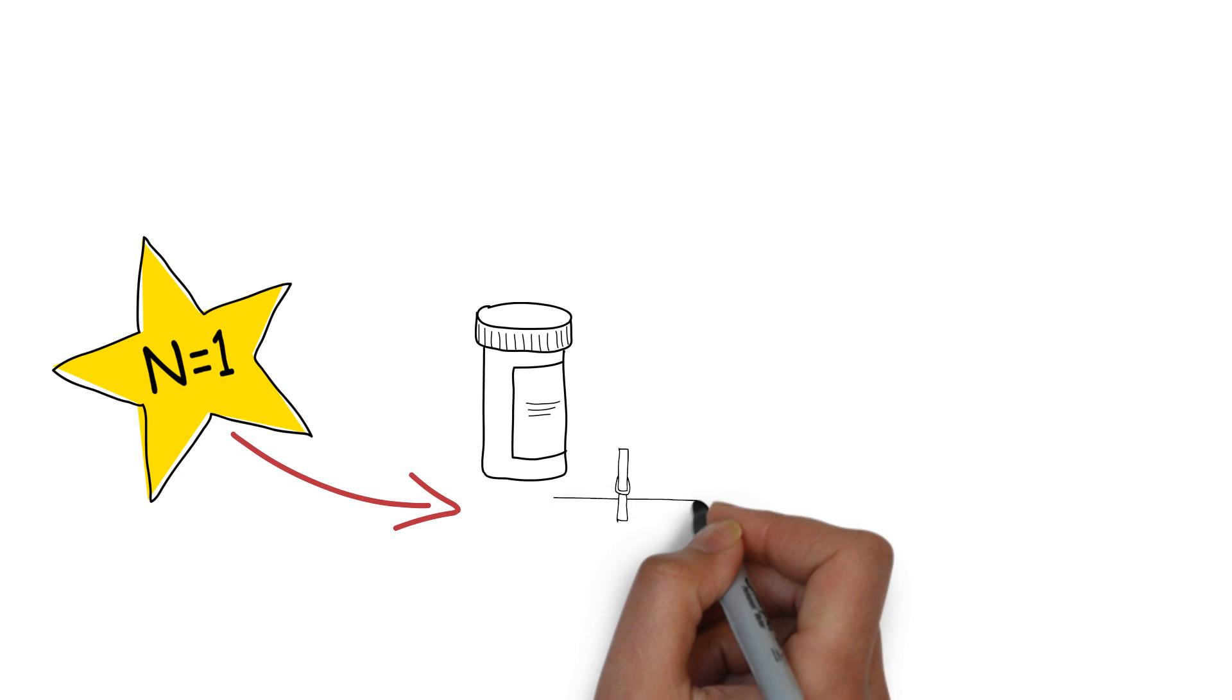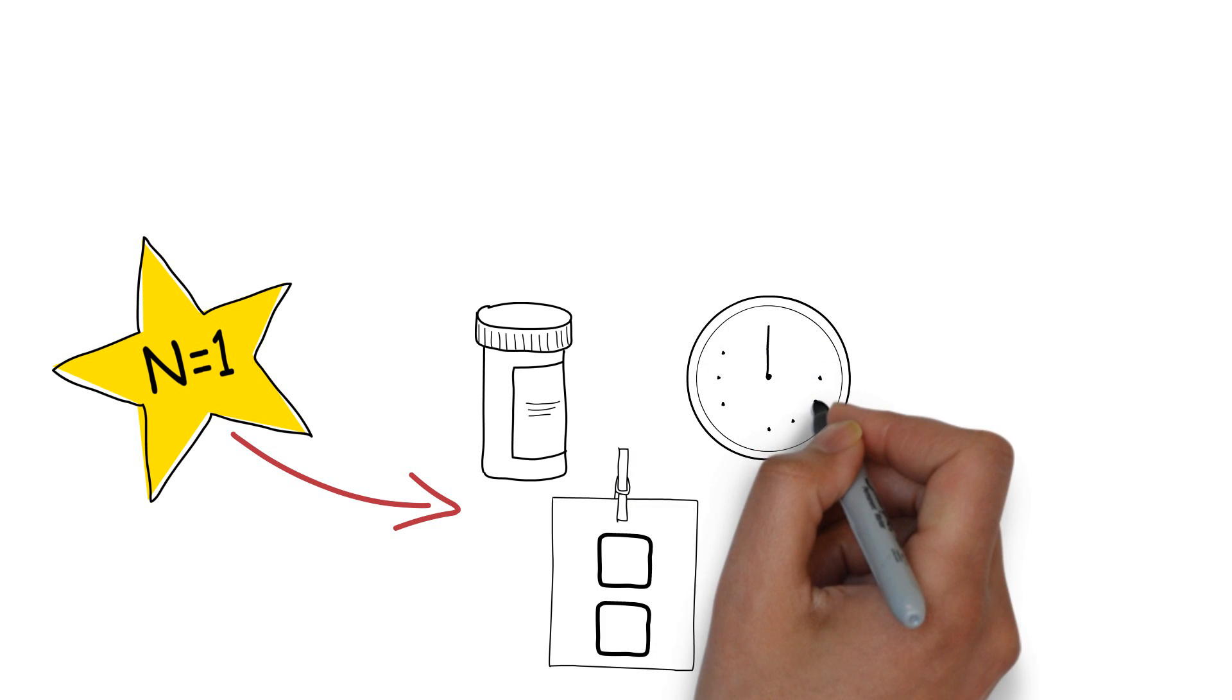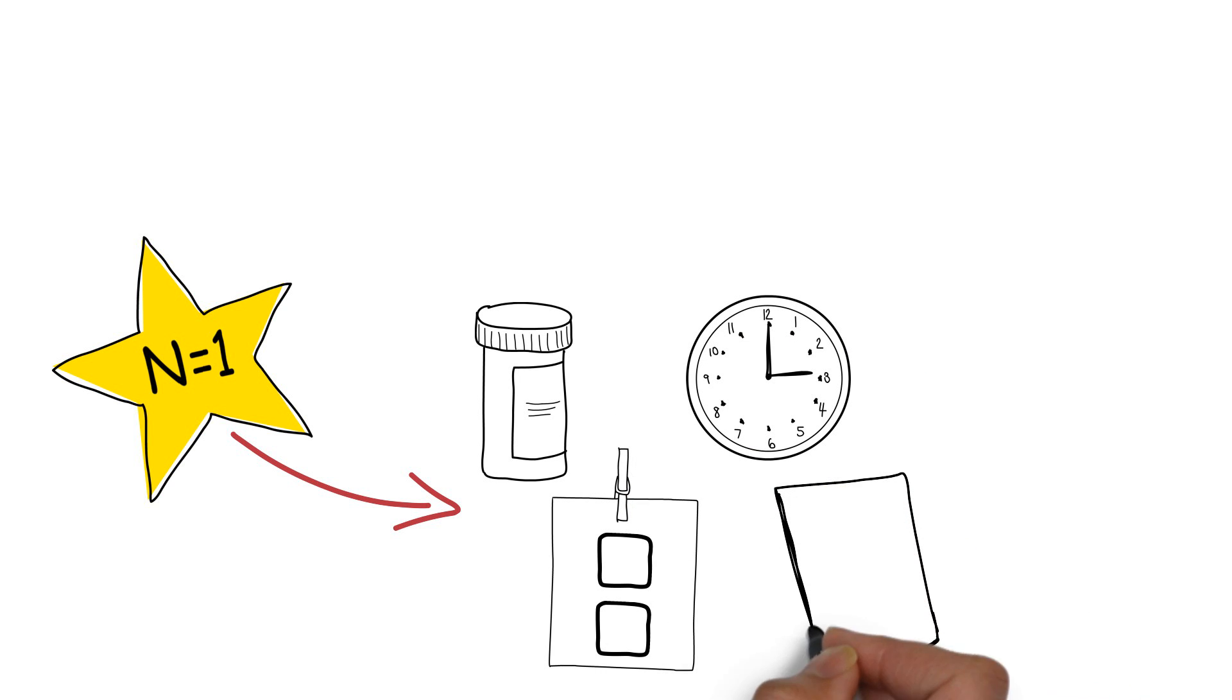A second challenge with N of 1 studies is ensuring that there's a clinically relevant outcome measure that you're going to look at. A third consideration is time. N of 1 studies can take weeks if not months to complete. A fourth challenge with N of 1 studies is that they're not really publishable, which means it's hard to learn from other people who have done them and you're not likely to get your N of 1 study published.